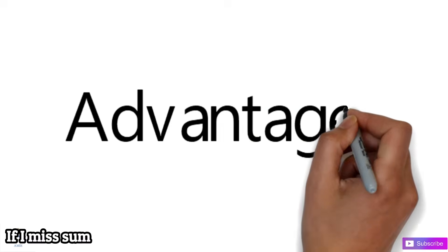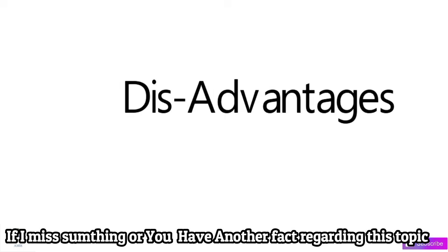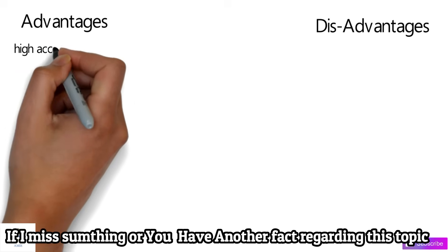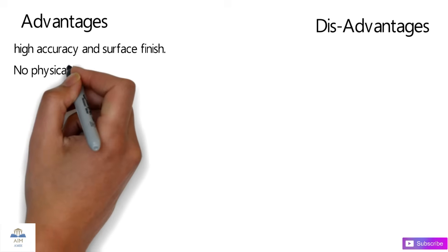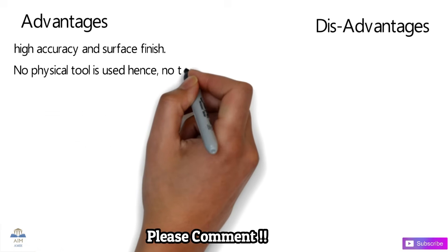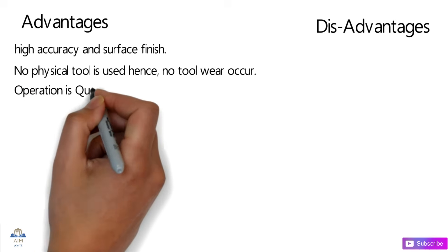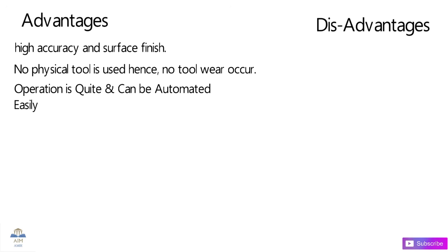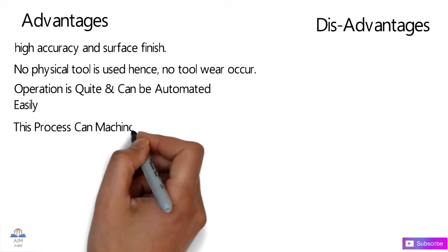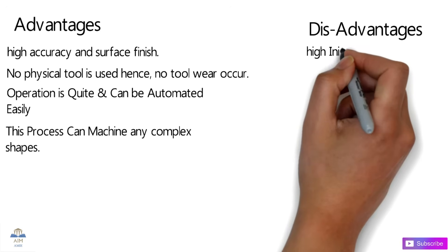The advantages of non-traditional machining include: high accuracy and high surface finish, no physical contact between tool and workpiece so no tool wear occurs, quiet operation that can be automated easily, and the ability to machine any complex shape or geometry.